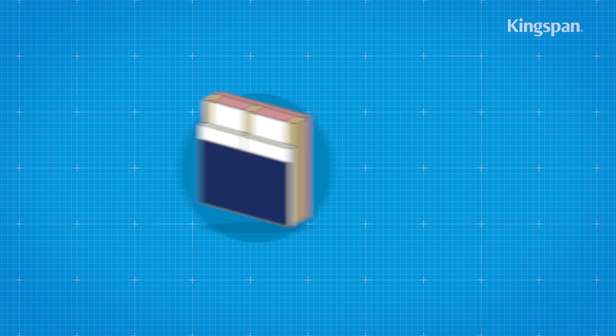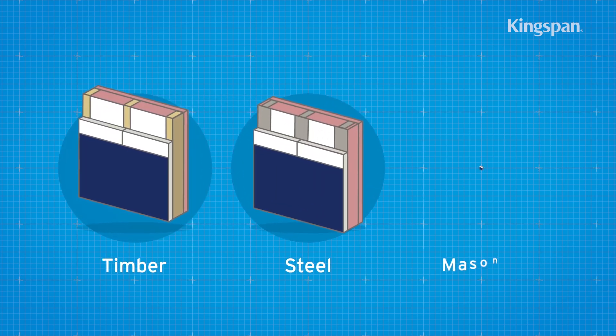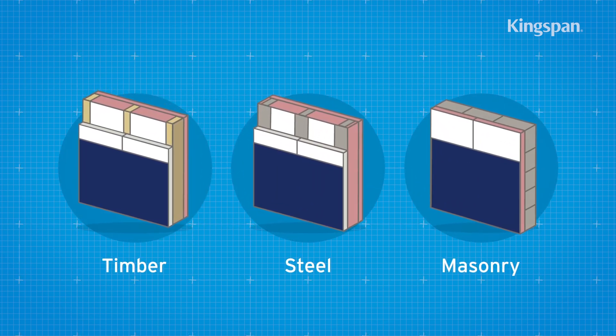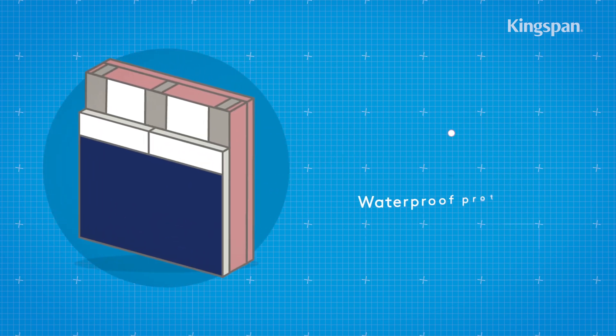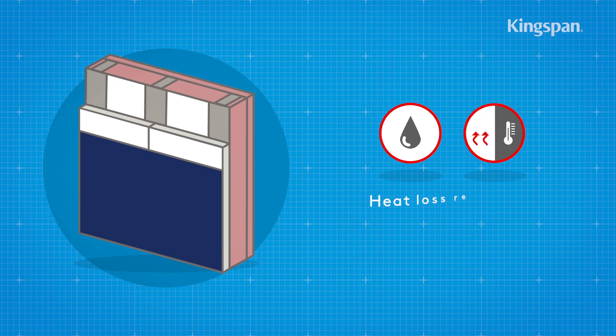It can be installed to the outside of timber, steel, or sometimes masonry constructions. The purposes of its application can include waterproof protection and heat loss reduction.